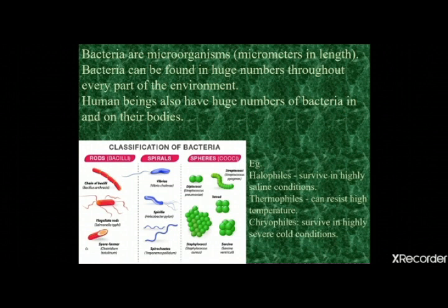In curd, the bacteria is Lactobacillus — that's one example. Classification of bacteria may be done by three different shapes: first are rods, called bacillus (plural: bacilli); second are spirals; and third are spheres, called coccus (plural: cocci).